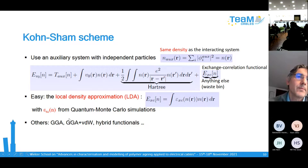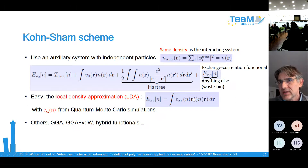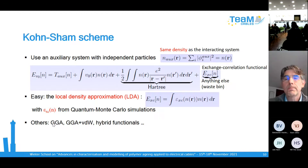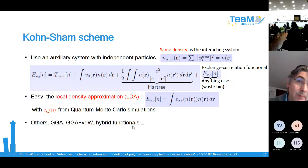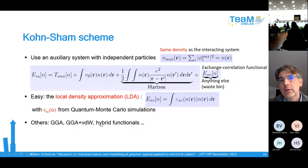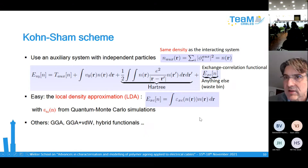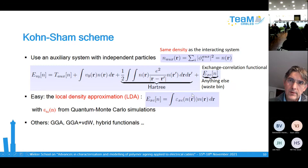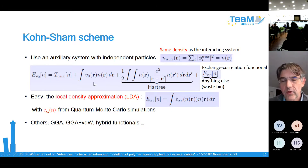Recently, functionals with a van der Waals part have been developed, because LDA and GGA don't correctly describe van der Waals interactions, which are important for polymers. There are also hybrid functionals, which include a portion of the Hartree-Fock exchange — not the full exchange because for many things that does not work — so it is a mix between the standard DFT formulation and Hartree-Fock exchange.